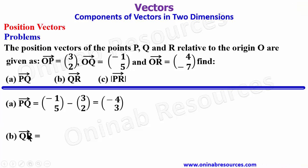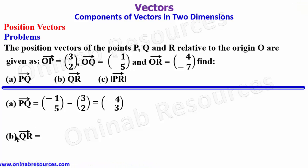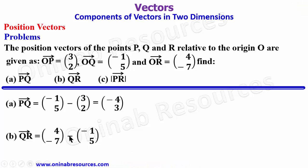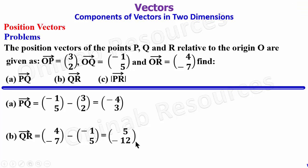For QR, it is the position vector of R minus that of Q: (4, -7) - (-1, 5). So 4 - (-1) = 5, and -7 - 5 = -12. The vector QR is (5, -12) as a column vector.